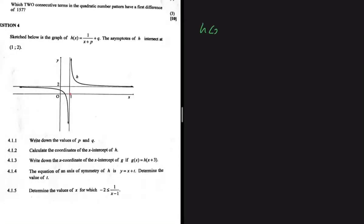We need to sketch the graph of h(x), where h(x) = 1/(x + p) + q. The asymptotes of h intersect at the coordinate (1, 2).